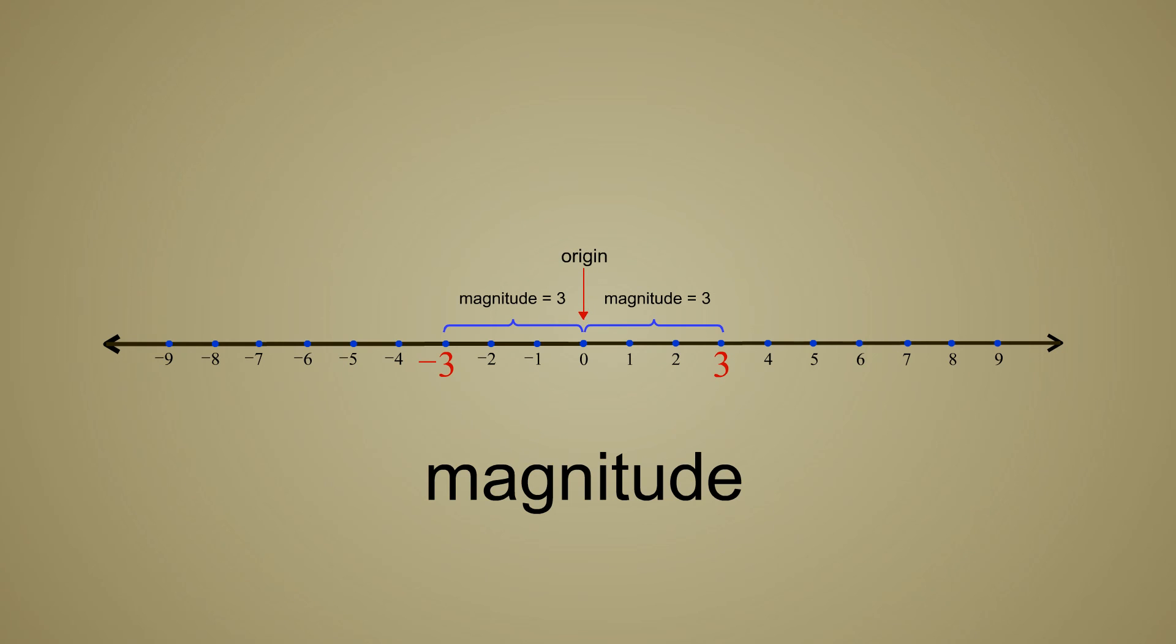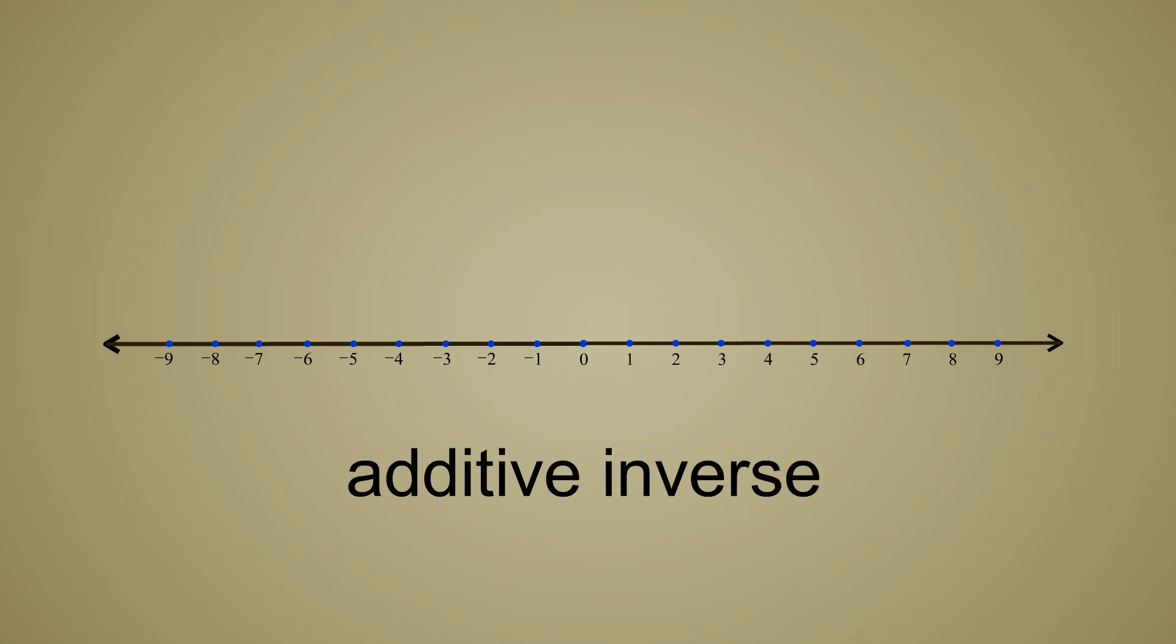If you take any number, positive or negative, and add a number of the same magnitude but the opposite sign, the result will be zero. This number of equal magnitude in opposite sign is called the number's additive inverse. Any number plus its additive inverse is zero.